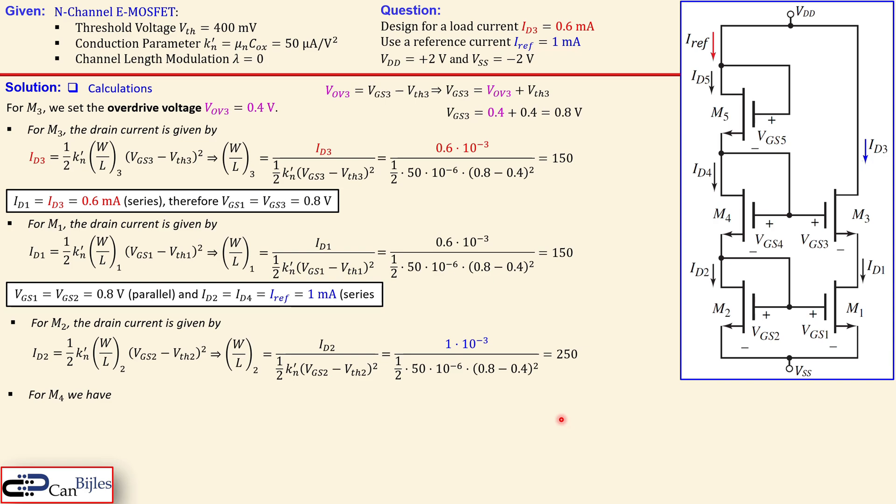Okay now for M4 we have exact same as M2 because they have the same current and also the same VGS value because in order to have the same current you need to have the same voltage, the gate to source voltage. So we can say that is exact same as we had for M2.